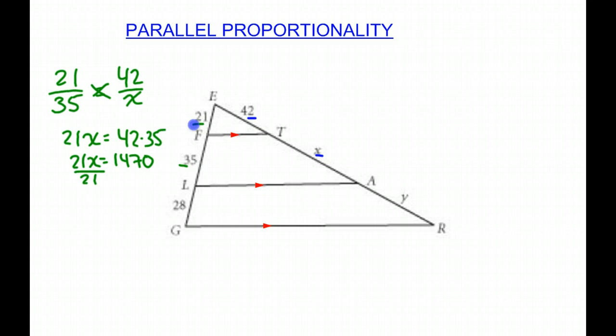21X will equal 42 times 35, which is 1470. Then we can divide by 21. And when we do that, we get X is 70. Now what some of you may have noticed was that the scale factor from 21 to 42 was times 2. So 35 to X, we times by 2, we get 70. So that's a good way to check.